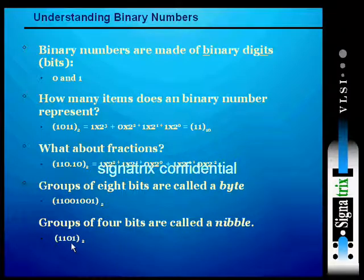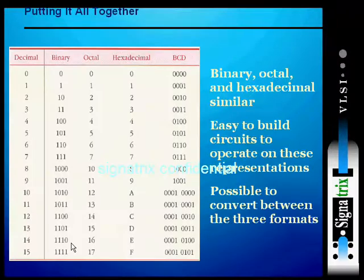Putting all this together, this chart indicates the decimal, binary, octal, hexadecimal, and BCD codes. Binary, octal, and hexadecimal are similar in the sense that changes or conversions between them can easily take place.